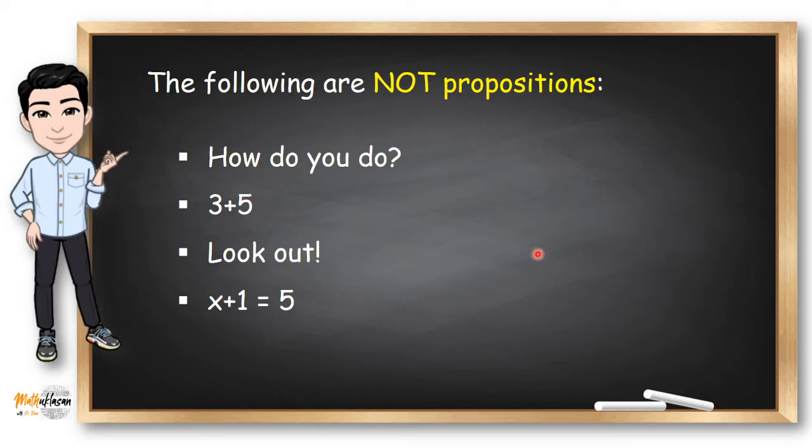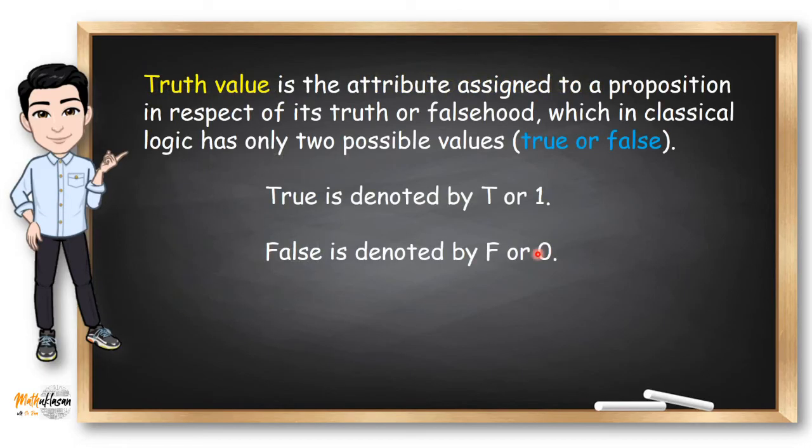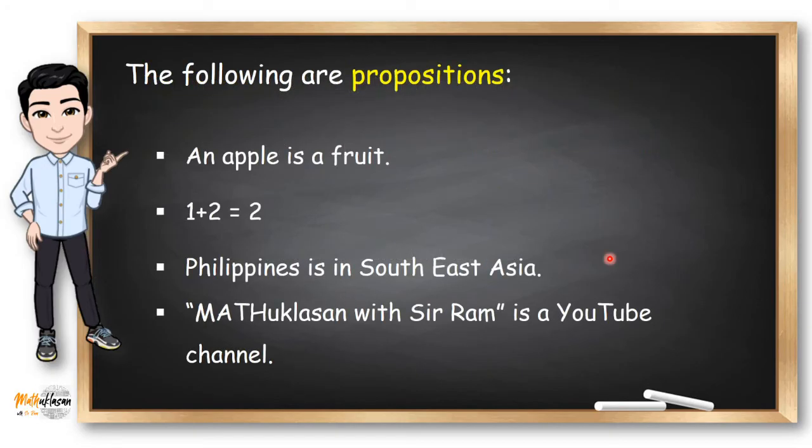Determining the truth or falsehood of a proposition is very important in logic. Truth value is the attribute assigned to a proposition in respect of its truth or falsehood, which in classical logic has only two possible values: true or false. True is denoted by capital T or one. False is denoted by capital F or zero.